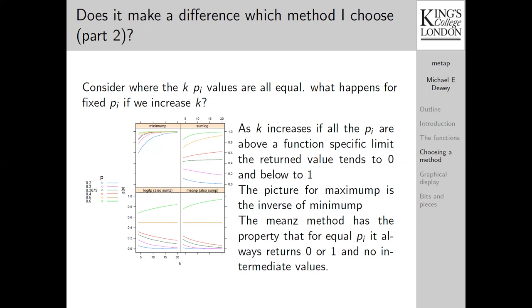The Fisher is an unusual case in that the specific limit is not 0.5. It's 0.3679 approximately. The mean z method has the rather strange and undesirable property that for equal p_i, it always returns either 0 or 1 and never an intermediate value.